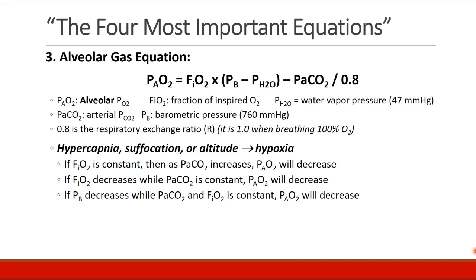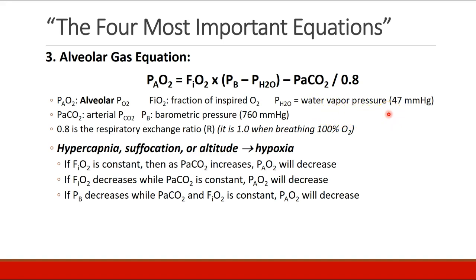The third equation is the alveolar gas equation. This relatively complicated-looking equation tells us about the oxygen side of things. Let's define our terms: PAO2 — capital A — stands for alveolar. FiO2 is the fraction of inspired oxygen. Pb is barometric pressure, corrected by subtracting pH2O, which is the water vapor pressure — always 47 mmHg. We also have PaCO2, the arterial pCO2. And finally, 0.8, which is called the respiratory quotient or respiratory exchange ratio.